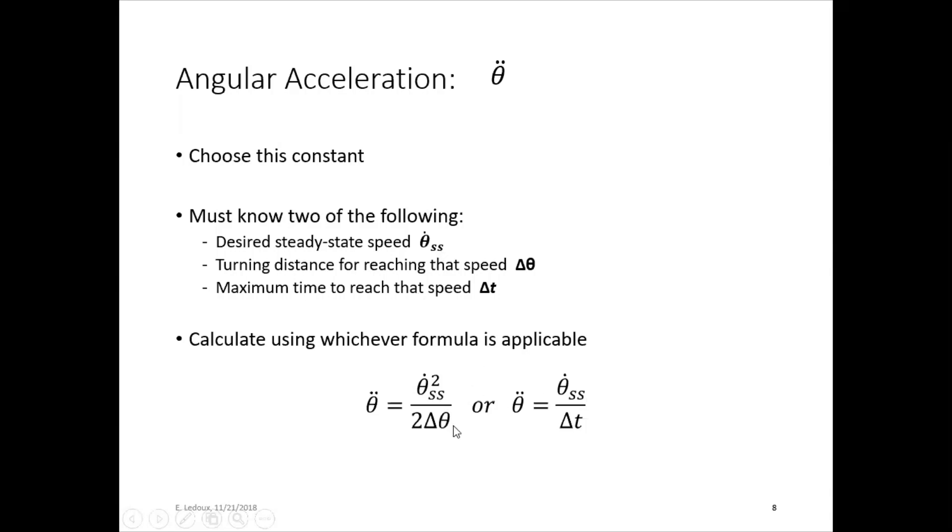So if you want your motor to reach a certain speed after it's turned through like 90 degrees, you could use this formula. Or you might say, we want the motor to reach that speed after three seconds. In that case, you would use this formula. And both of these can be derived from the constant acceleration equations.